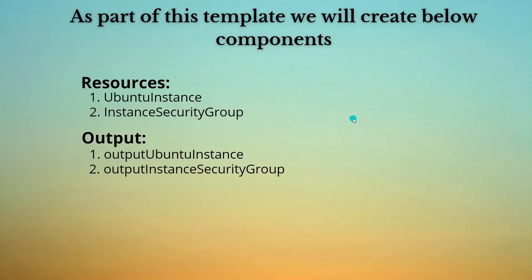Let's understand the components involved in the template we are going to build. We will require two resources: one is the EC2 instance resource and the other is the security group. We also have an output section — it is always best practice to have output where you can check what resources have been created as part of your resource block. Now let's jump to Visual Studio Code and start building the template.